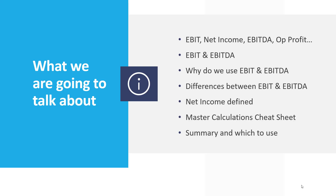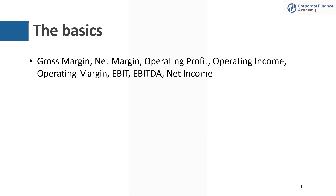Today we're going to talk about EBIT, EBITDA, net income, profit, margin, and operating income. We're going to cover it all and talk about what they are. We'll go through specifics on EBIT and EBITDA — why we use them and what the differences are to find net income. Then we're going to give you a master calculations sheet with all these profitability terms and how they're calculated, plus a summary on how you decide which one to use. Let's dive right in.